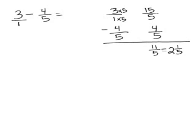So my answer is 2 and a fifth. The other way to do this problem is instead of making the 3 a fraction, I'm going to borrow from the 3, make it a 2, and then I'm going to have a fraction of 5 fifths which is my other 1. And then I'm going to subtract 4 fifths from that.